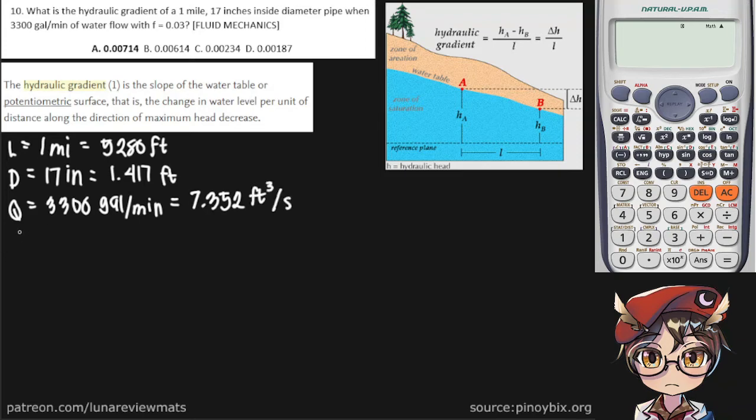And then finally, we have f is equal to 0.03. Now the f is usually, in fluid mechanics, it refers to the Darcy-Weisbach friction factor. So that is a clue as to how we are going to get our answer. So the Darcy-Weisbach equation is given by HL equals the friction factor times the length over the diameter of the pipe multiplied by the velocity of flow squared over twice gravitational acceleration.